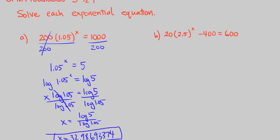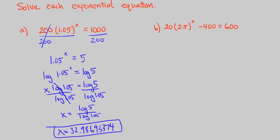So here we have part b, and we want to solve for x. What we want to do first before we divide both sides by 20 is we want to get rid of the 400. So let's add 400 to both sides.